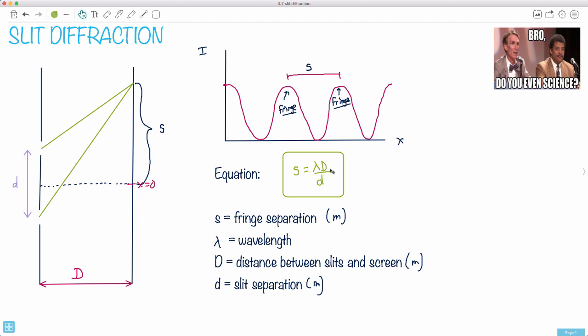By the way, the wavelength is also in meters, so luckily the units all work out. s is in meters, equals something in meters times something in meters—meters times meters over meters. Notice the meters cancel out, so it all works out.